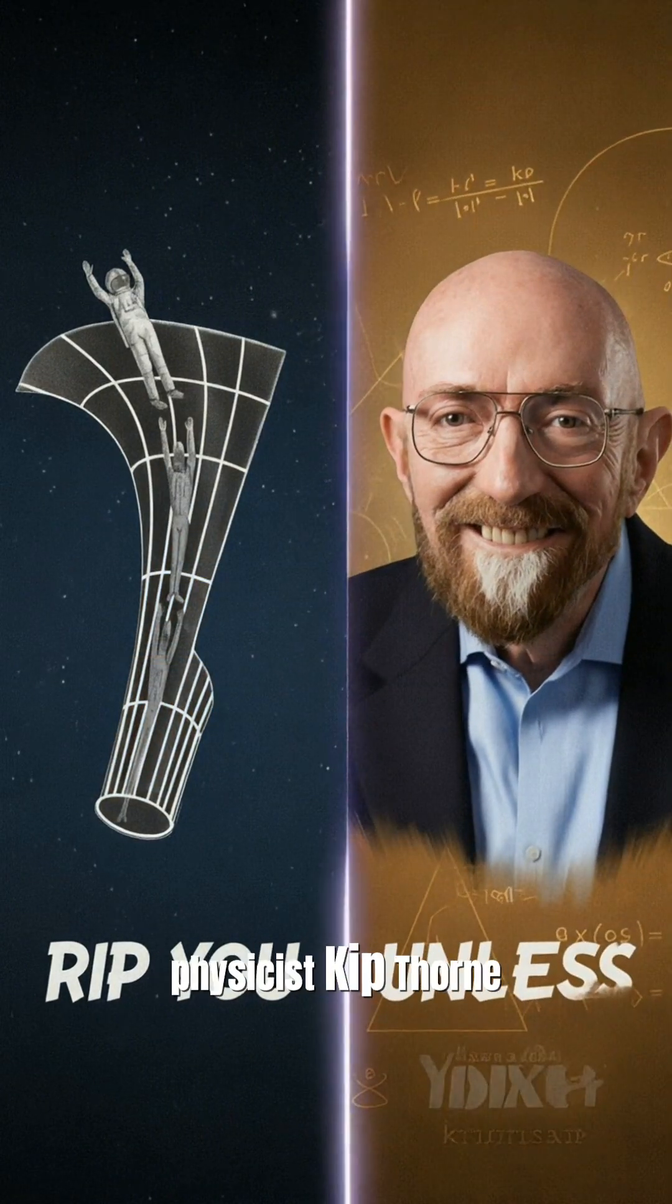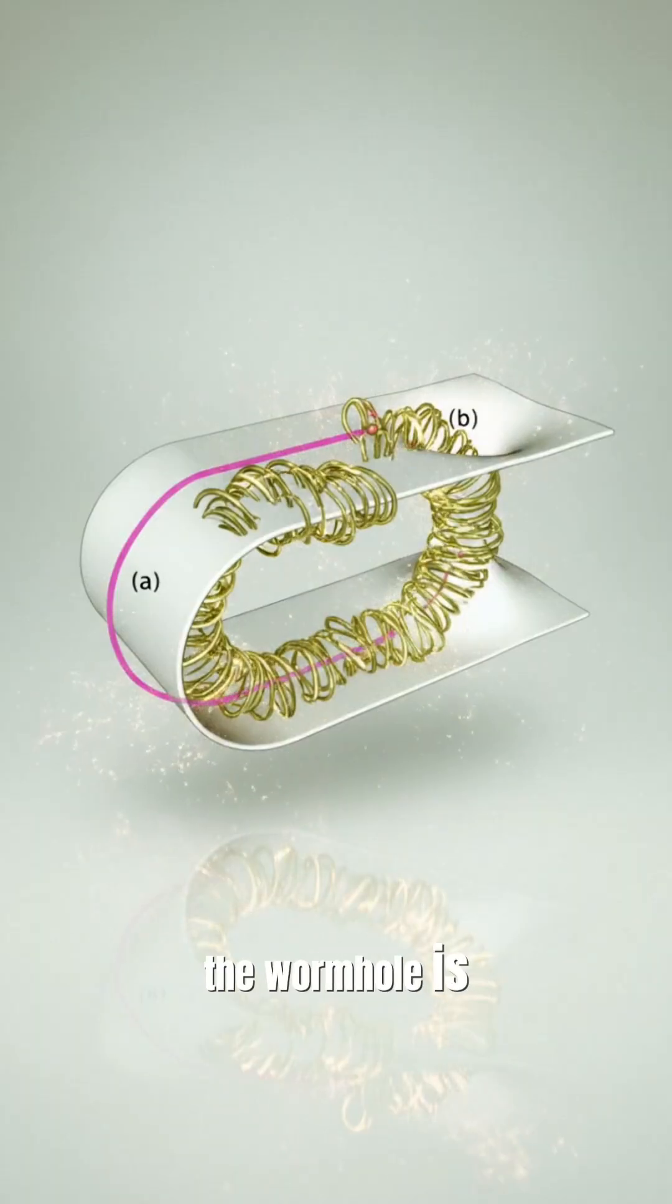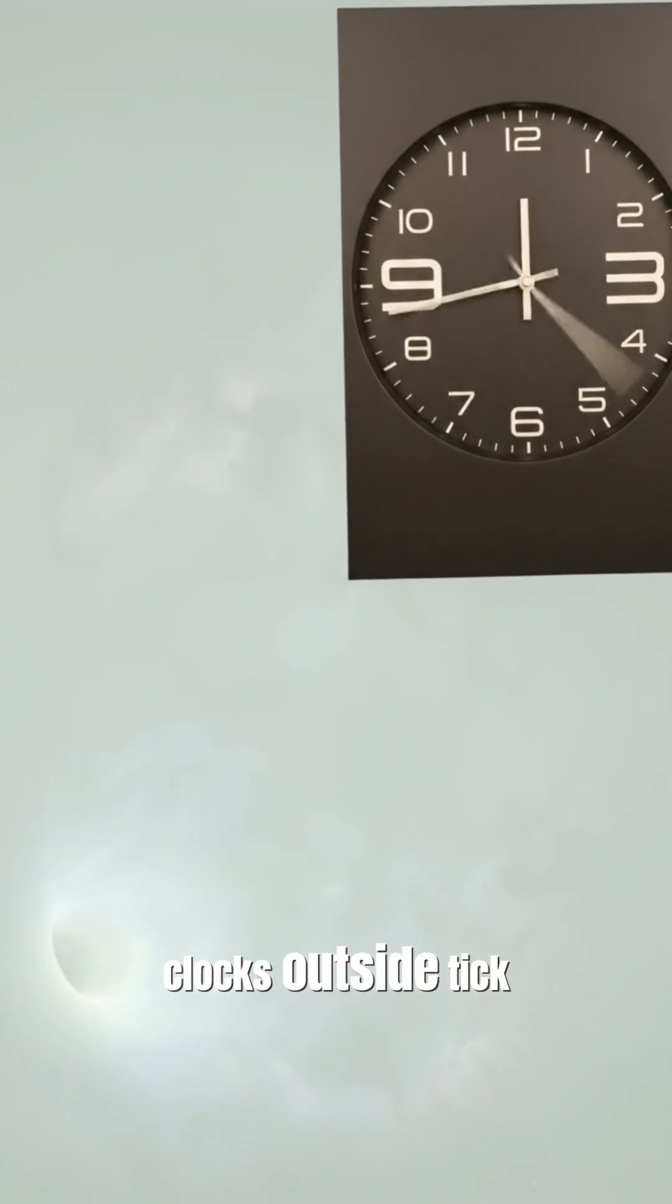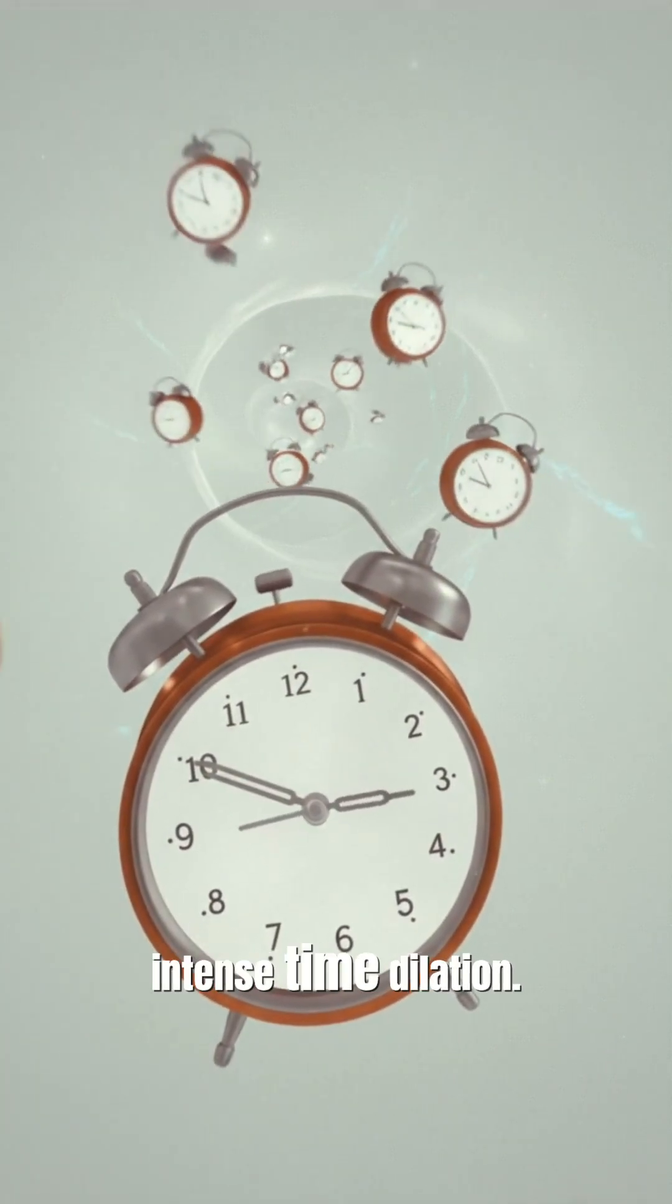Unless, as physicist Kip Thorne suggests, the wormhole is traversable and stable. Inside, time gets weird. Clocks outside tick faster, and you might age slower thanks to intense time dilation.